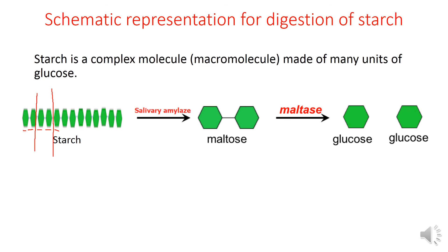Starch in the presence of salivary amylase gives maltose. Then, in the presence of maltase — an enzyme that digests maltose into glucose — it separates the two glucose units. So starch is digested first into maltose, and then maltose is digested by the action of maltase into simple nutrients called glucose.